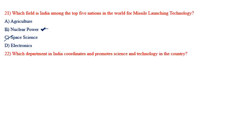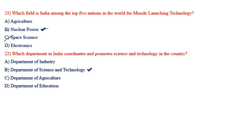Which department in India coordinates and promotes science and technology in the country? Options: Department of Industry, Department of Science and Technology, Department of Agriculture, Department of Education. The answer is the Department of Science and Technology.